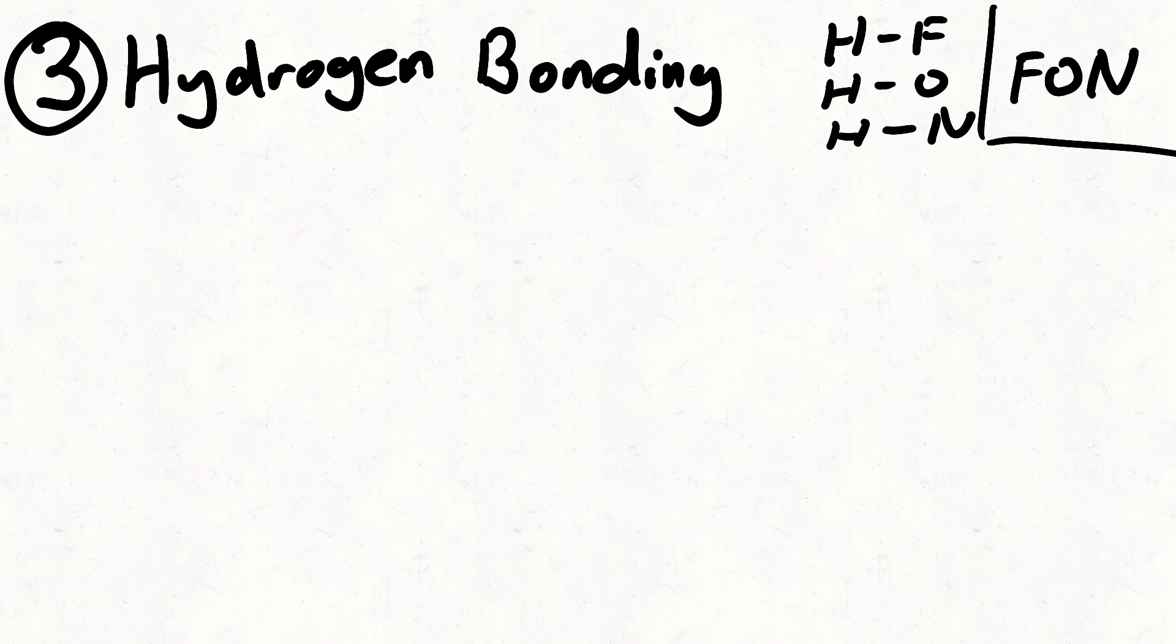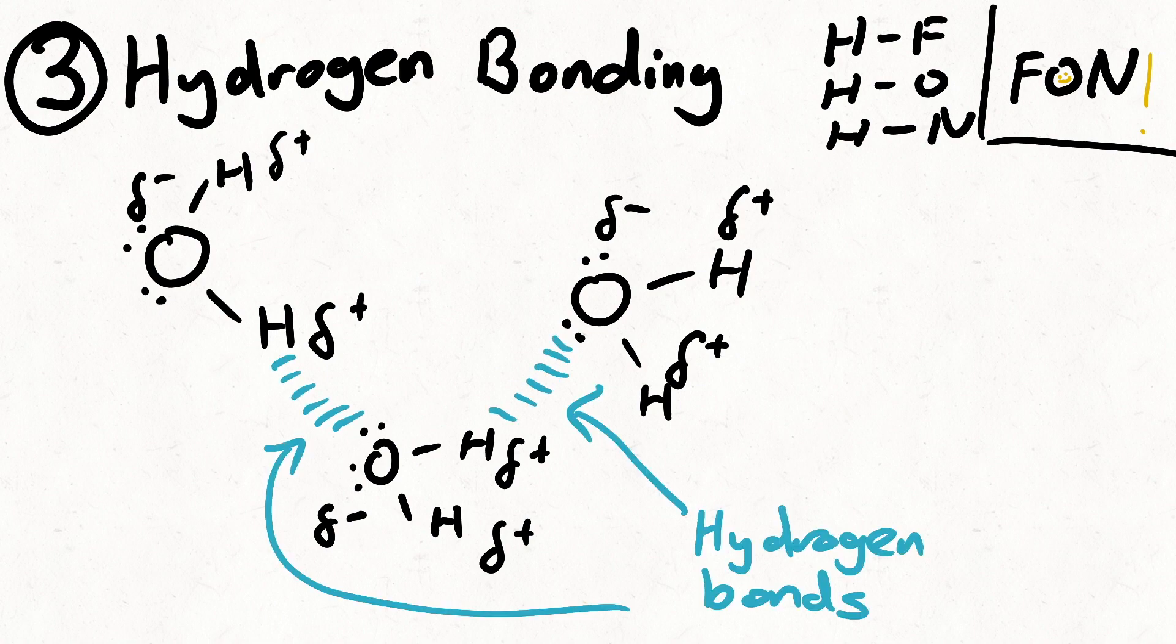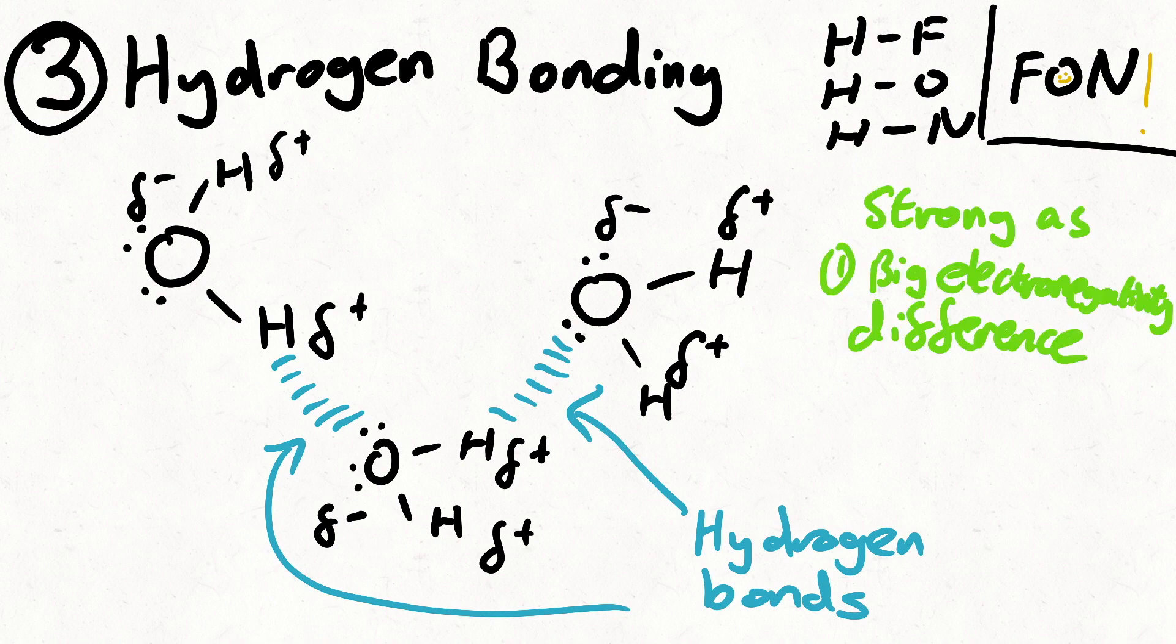Finally, we have hydrogen bonding. This occurs when molecules have a hydrogen atom attached to an F, O or N atom, or FON. A classic example of hydrogen bonding is water. Each oxygen has two lone pairs, and the oxygen is much more electronegative than the hydrogen, so we have a polar bond. Now there's an attraction between the hydrogen and the lone pairs on the oxygen. This is a hydrogen bond. The reason why these bonds are so strong is because of the large difference in electronegativity, so they can interact strongly with one another.